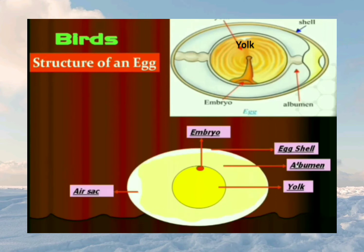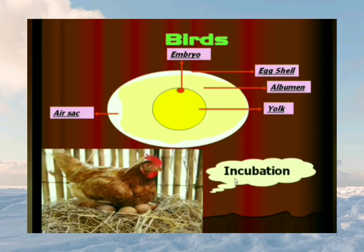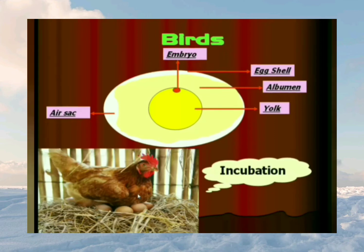The yolk is surrounded by a watery transparent material called albumen. A bird's egg has a hard shell to protect the chick growing inside. A mother keeps the eggs warm by sitting on them — this is called incubation. Once incubation completes, the eggs hatch and the chicks come out.